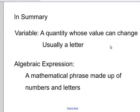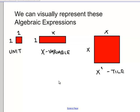In summary, in this video we talked about variables and algebraic expressions. Variables are quantities whose value can change, usually represented by a letter. Algebraic expressions are mathematical phrases made up of both numbers and letters or numbers and variables. We defined what our algebraic model for working with variables and numbers is. We can represent positive units with square tiles and use blue tiles for negative values.